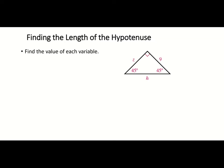Here we have a 45-45-90 triangle, and you want to identify your two legs — the two sides that make up the right angle. One leg is 9, and since both legs are congruent, Z is also 9. The hypotenuse of a 45-45-90 is always the leg times the square root of 2, so that makes it 9√2. That's all we have to do for that one.